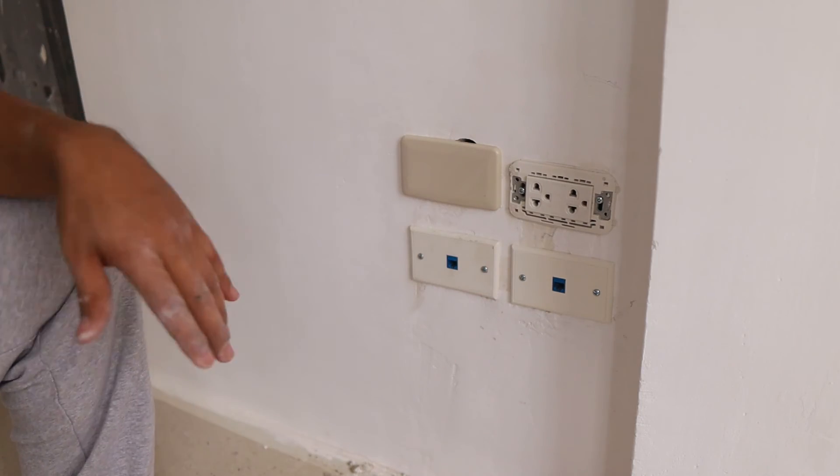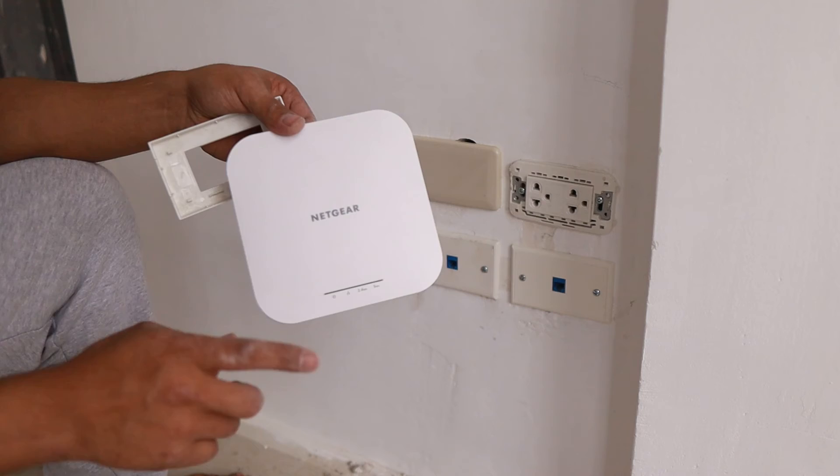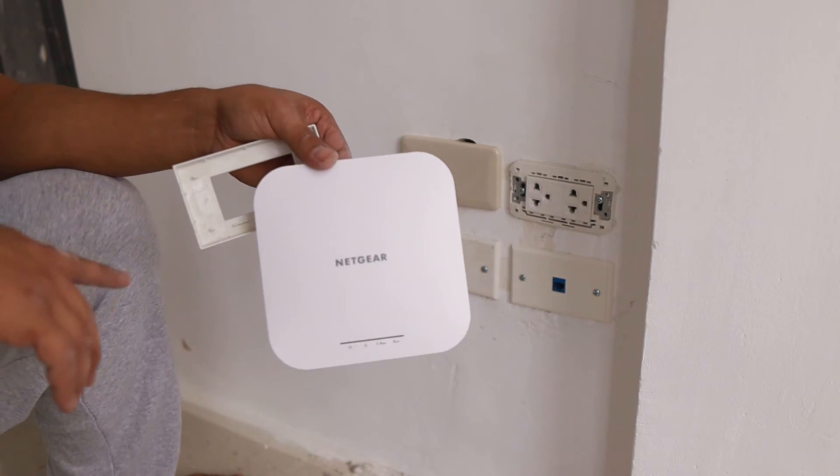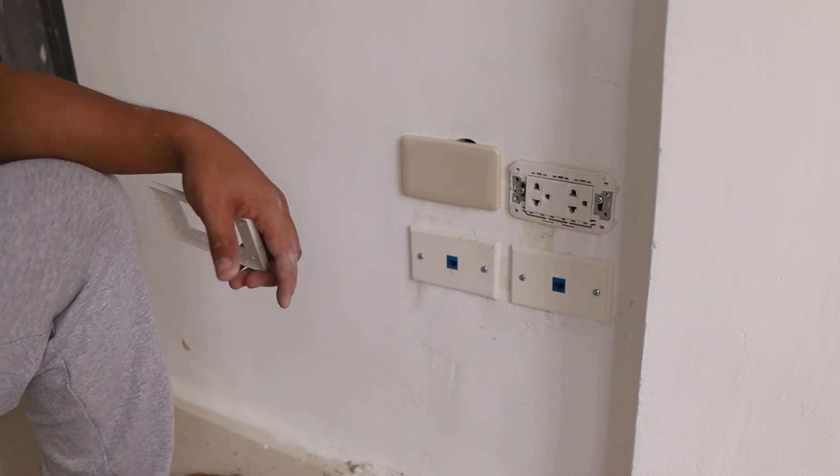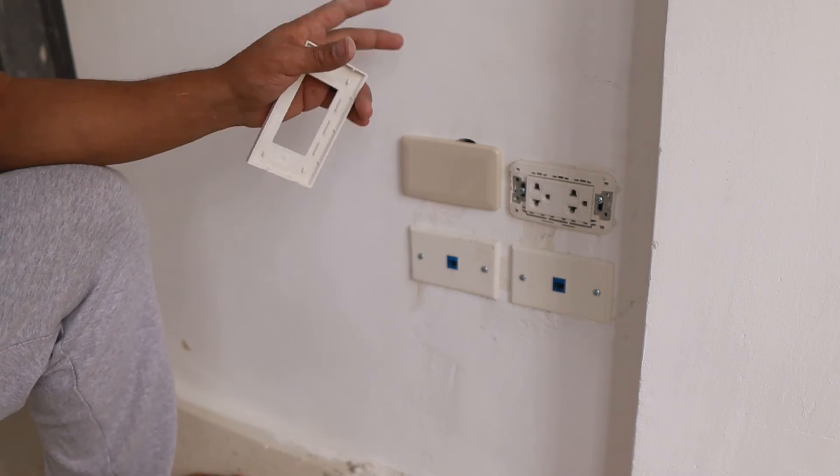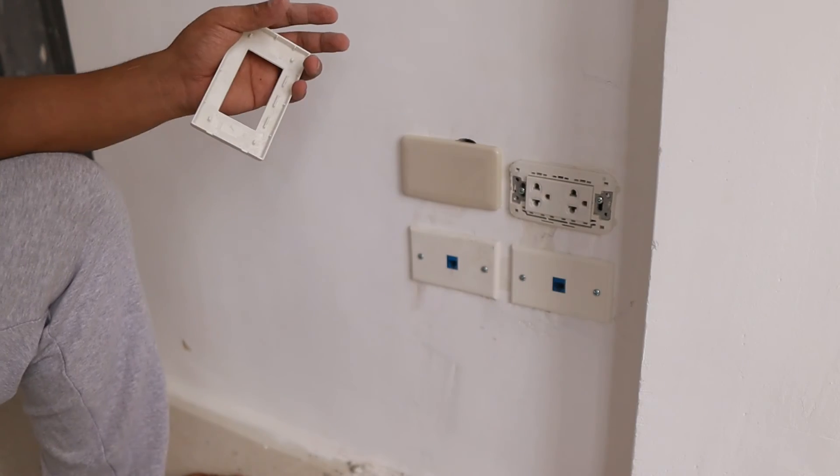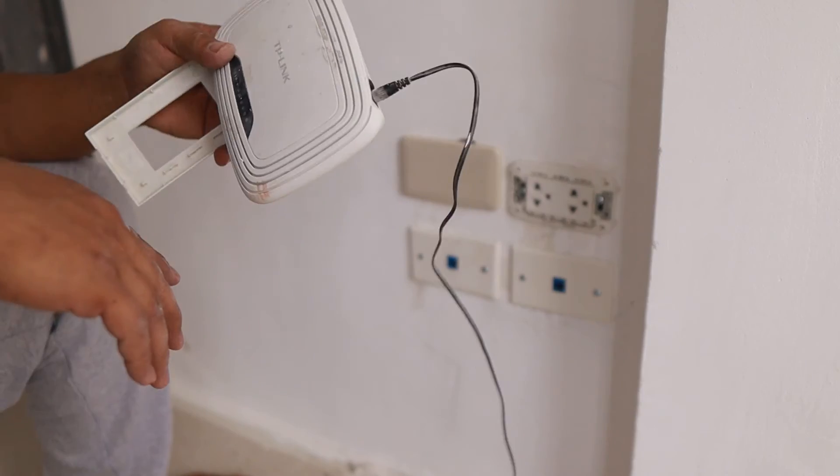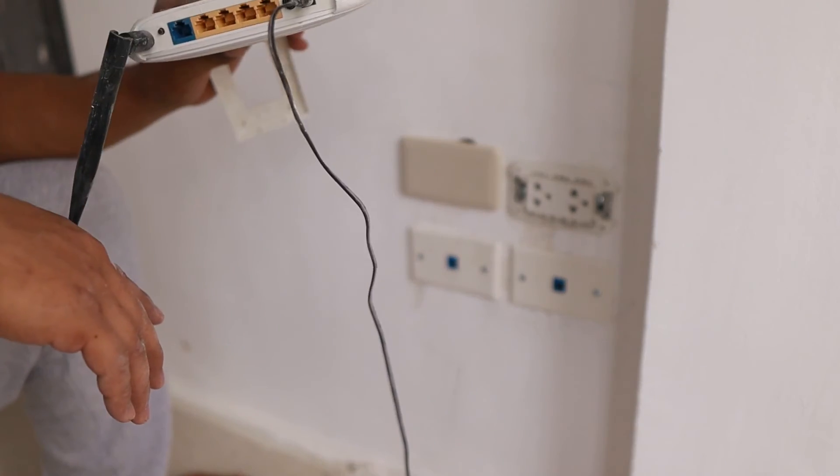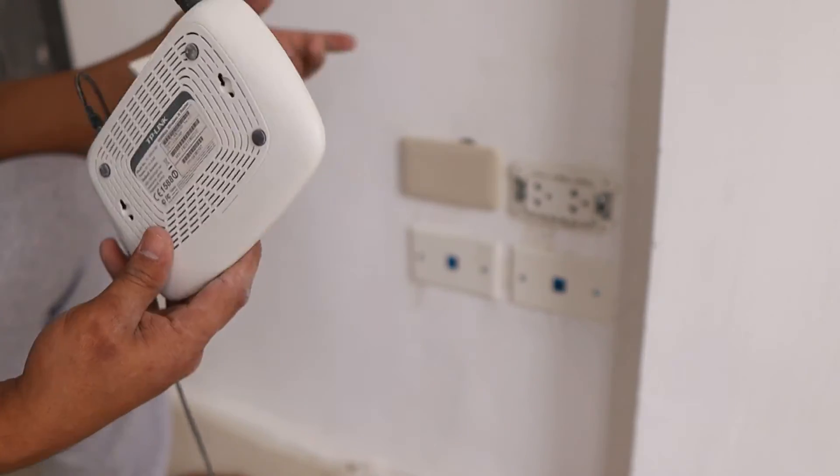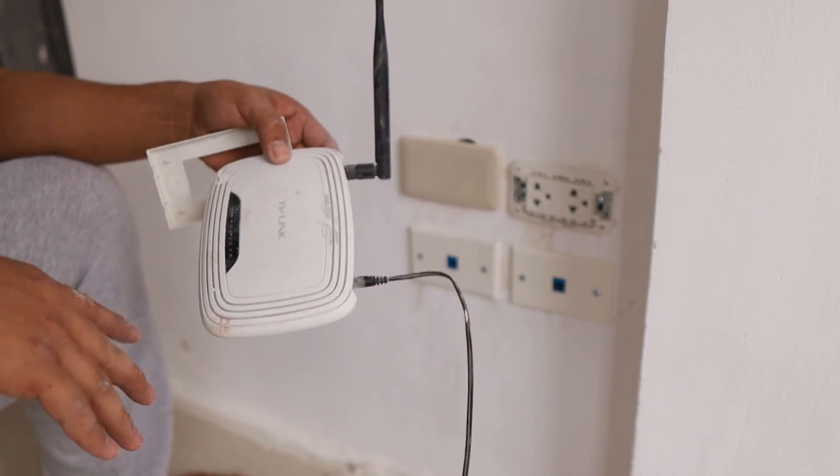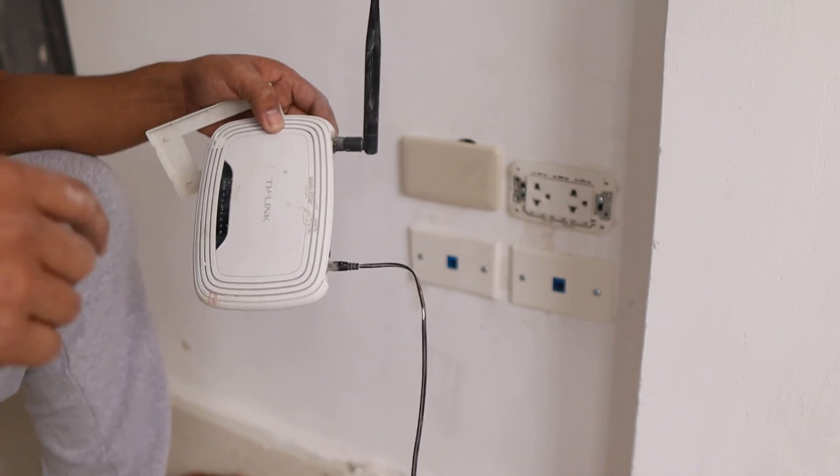Actually I have the Netgear that I have shown you in my previous video but I'm not going to use this one in this video because people are still working on the house finishing touches. So we are using a TP-Link that they can use, it's very dusty, very dirty so that they can still connect to the wifi but when time comes I'm going to replace it with the Netgear.